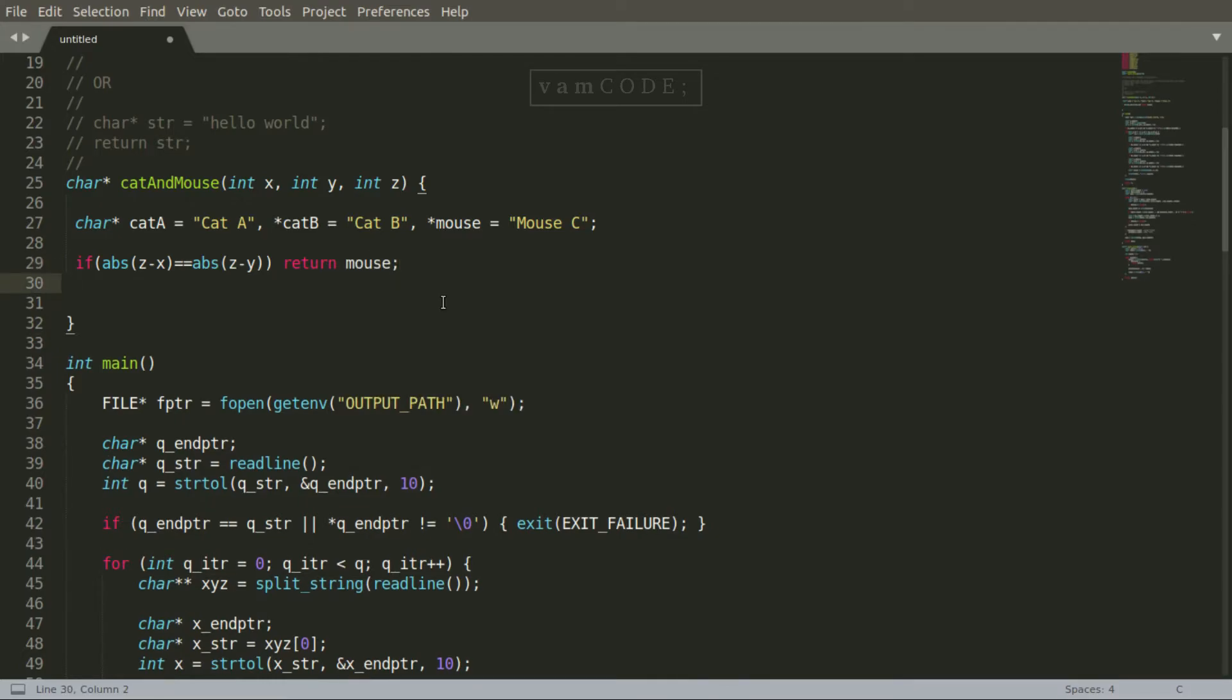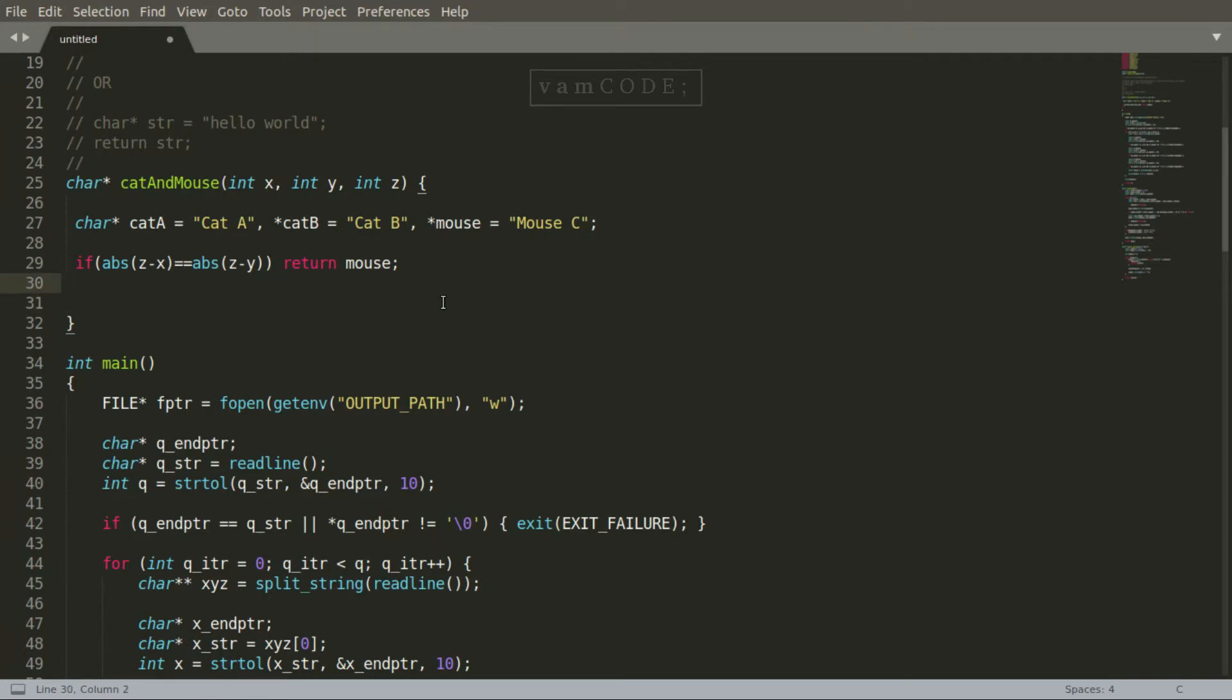If this condition fails, then we return either cat A or cat B depending on the evaluation of the ternary operator. If z minus x is greater than z minus y, it means that cat A is at a farther distance from the mouse. So we return cat B. And if z minus y is greater, then cat B is at a farther distance from the mouse. So we return cat A instead.